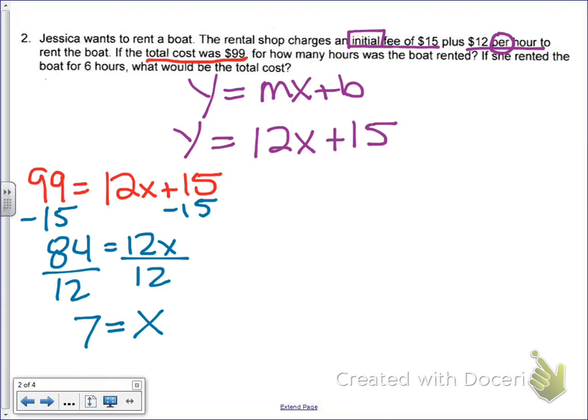But, again, what does x represent? That represents hours. So 7 hours is how long I rented the boat for for $99. All right, then we're going to do a second question because we answered the first one.